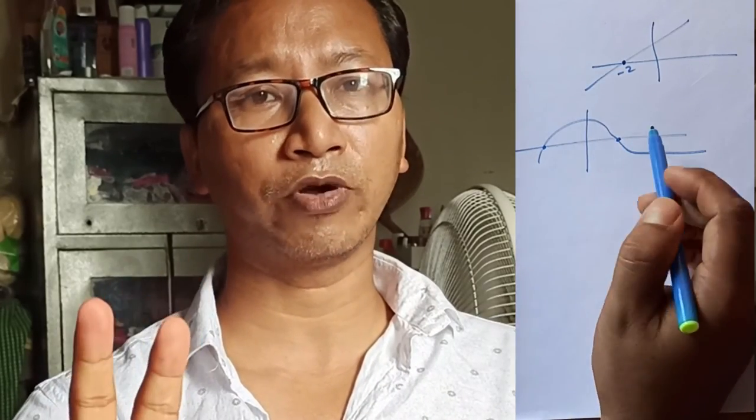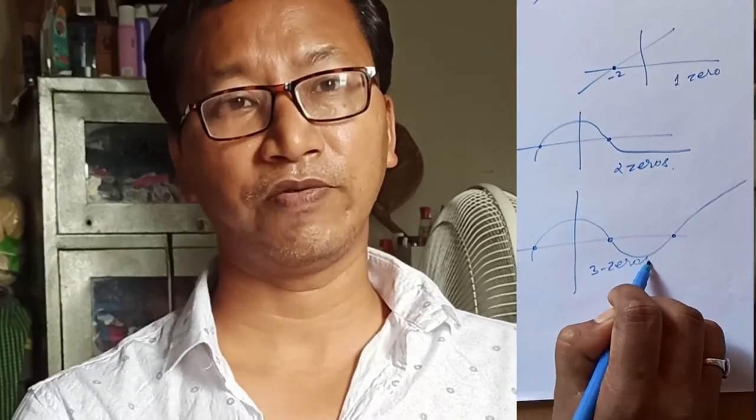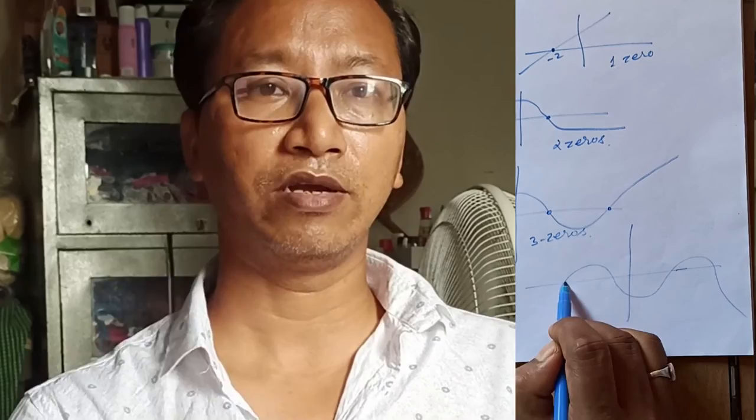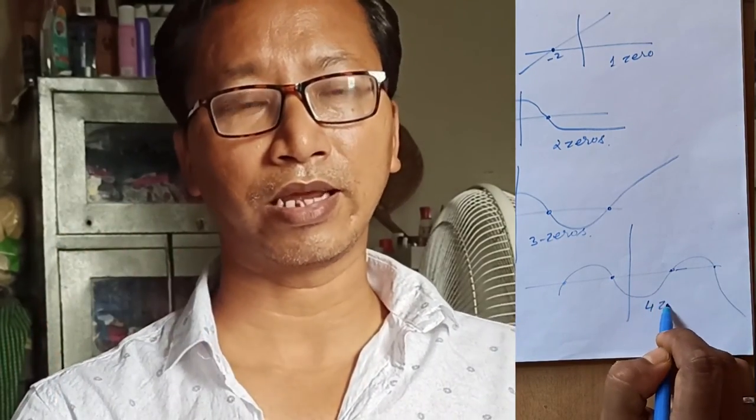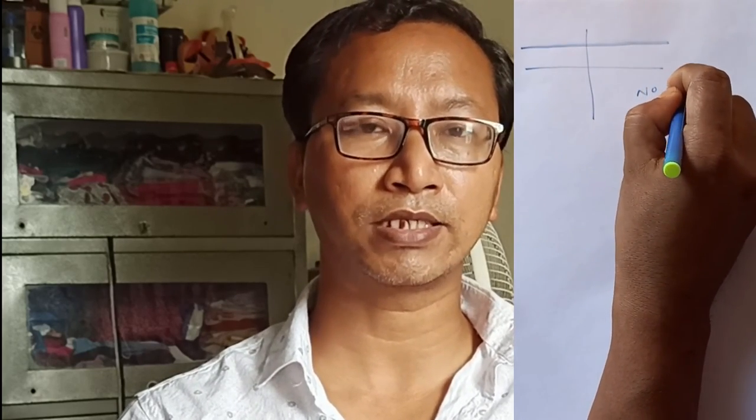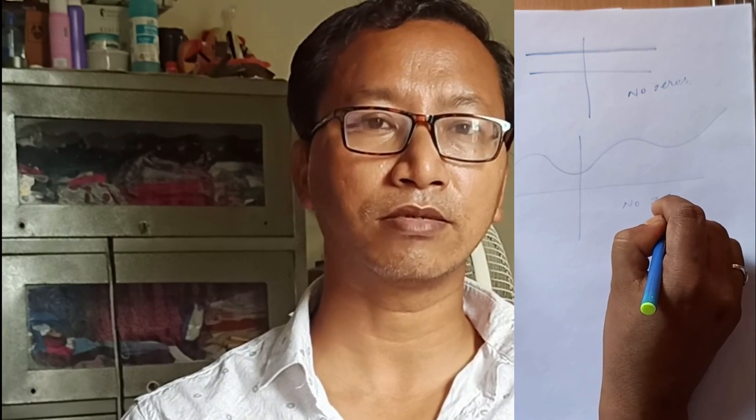If the polynomial is quadratic, cubic, or any higher degree, it represents a curve, and a curve may intersect the x-axis at more than one point. If the curve intersects the x-axis at two different points then there will be two zeros; if at three different points then there will be three zeros. Also remember that a line or a curve may not intersect the x-axis at all — in that case there are no zeros for that polynomial.